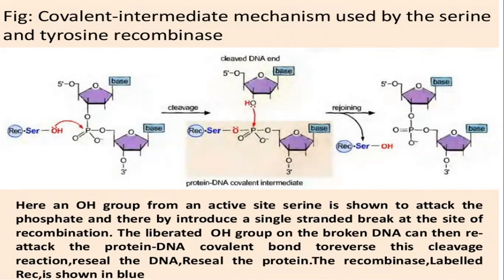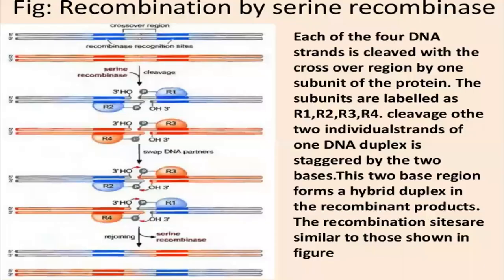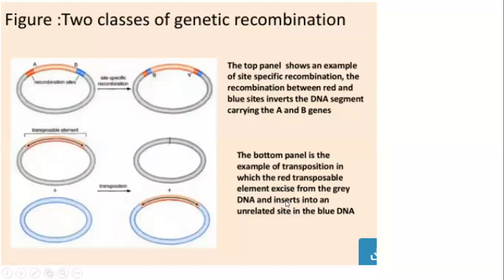The recombinase attacks the phosphate group, forming a transient covalent bond. After recombination, the liberated OH group on the broken DNA can re-attack the protein-DNA covalent bond to reverse the cleavage. The OH group of the newly joined strand attacks and the DNA is rejoined. The recombinase came, made a bond, broke the strand, the strand got exchanged, then it attacked back and rejoined — releasing the same energy that was used.